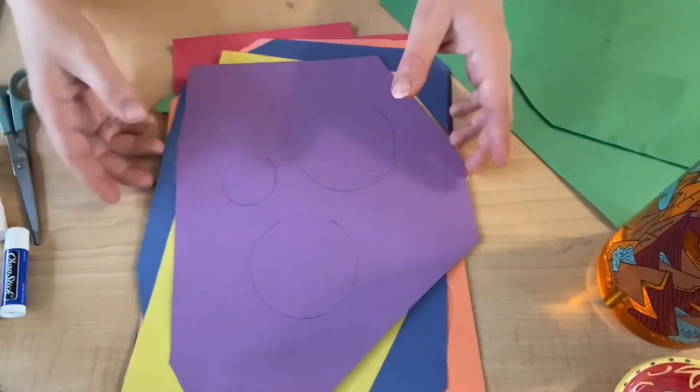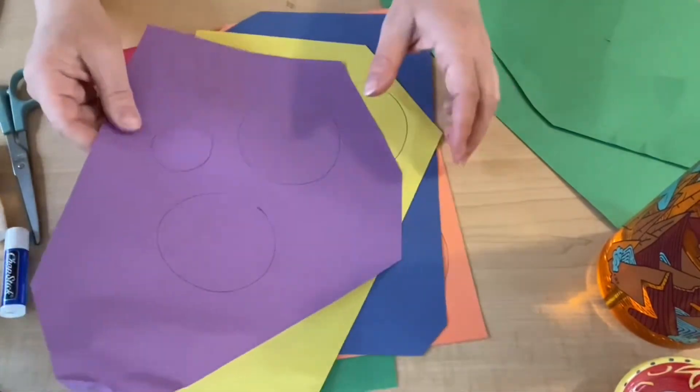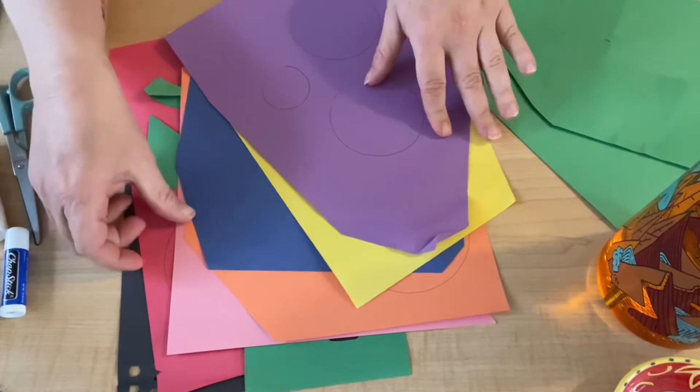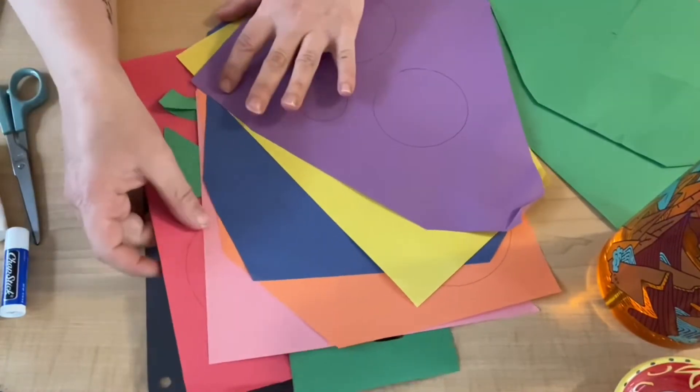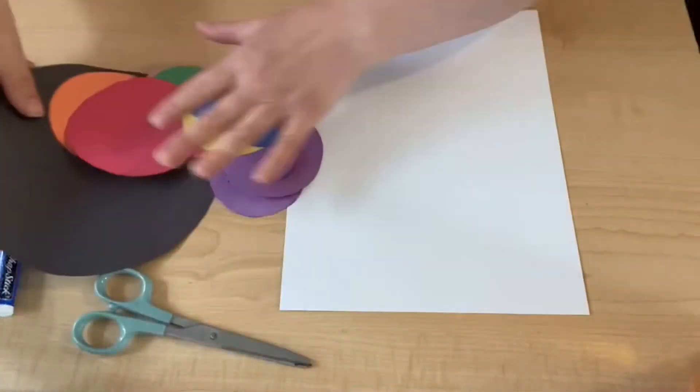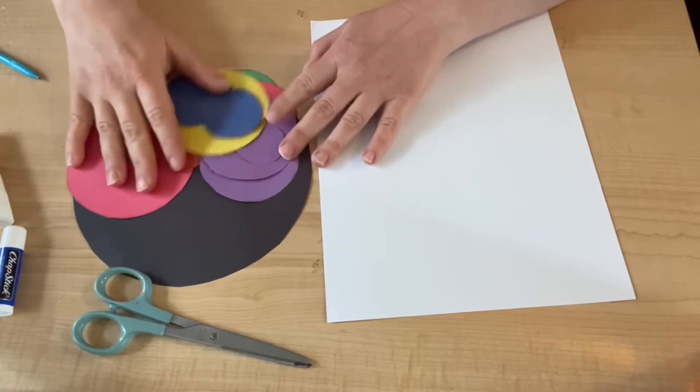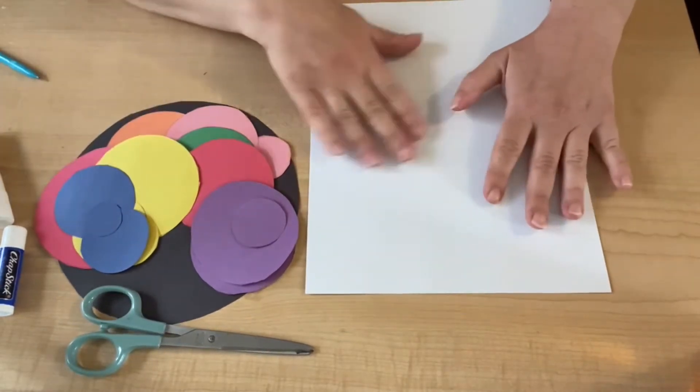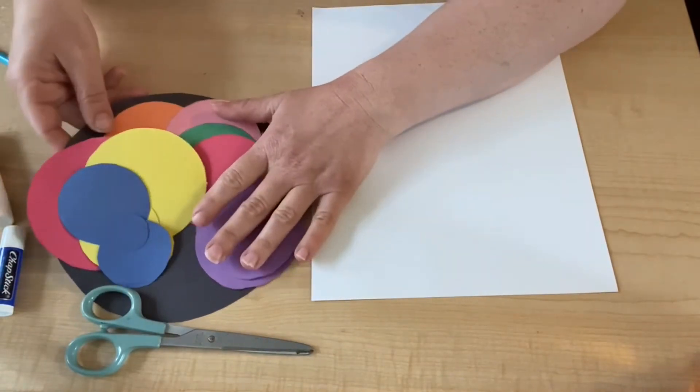Okay, friends, I have gone through and drawn circles on all these pieces of paper, so I have a nice wide variety of colors, and now I'm going to cut them out. I've got my circles here, all cut out, variety of colors and sizes, and now I'm kind of just going to arrange them on my paper and see what I like.